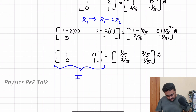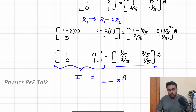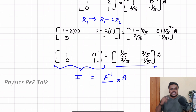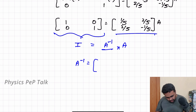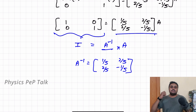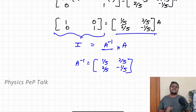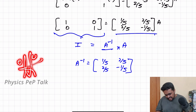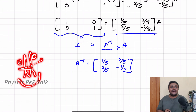LHS is [1, 0; 0, 1] — the identity matrix — equal to [1/5, 2/5; 2/5, -1/5] into A. This is of the form identity matrix equals A inverse into A, by the property of the inverse of a matrix. So A inverse equals [1/5, 2/5; 2/5, -1/5]. This is the required solution. That's it for this video — if you like my efforts, please like, share, comment, and subscribe. This is your teacher Naga Barana, signing off with a smile. I will meet you in the next video. Until then, have a nice day, bye.